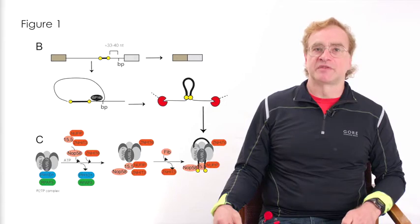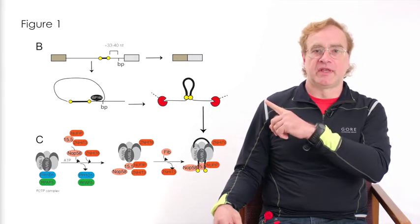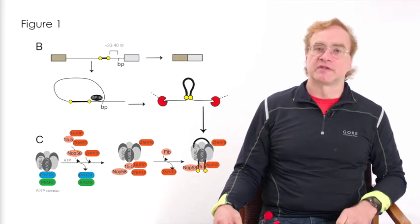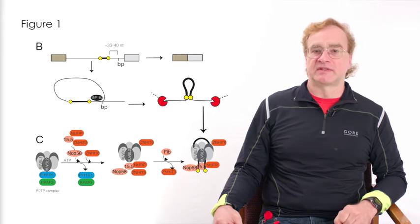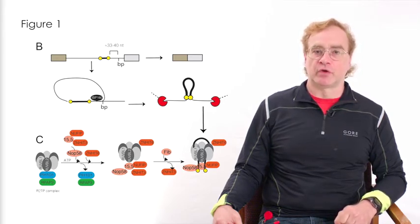The snoRNA escapes this degradation process because of the self-complementarity at the end, and because there is a protein complex known as the R2TP complex that assembles proteins on the snoRNA that prevents further degradation.